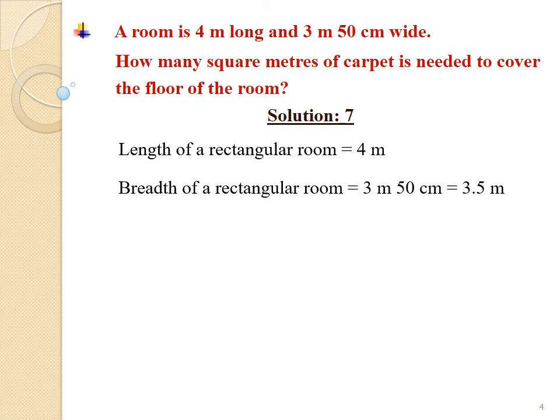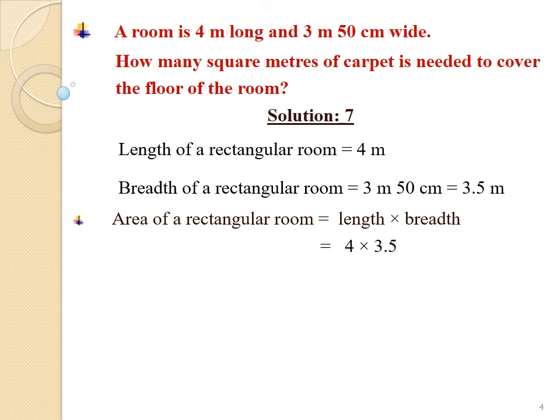The area of the rectangular room equals length multiplied by breadth, equals 4 multiplied by 3.5, equals 14.0 or 14 square meters. Thus, 14 square meters of carpet is needed to cover the floor of the room.